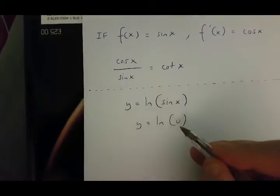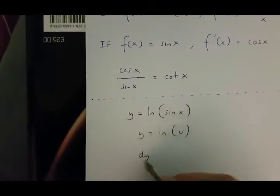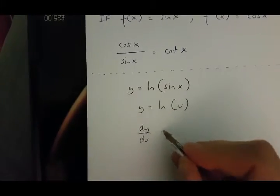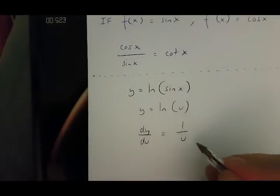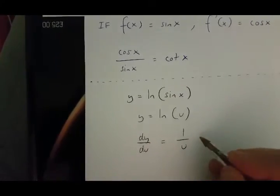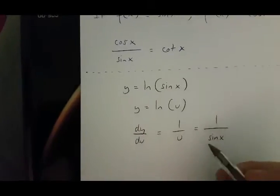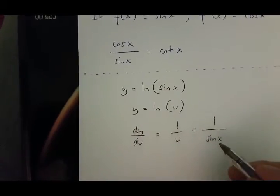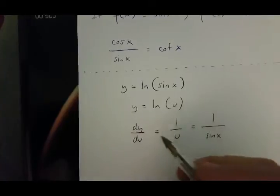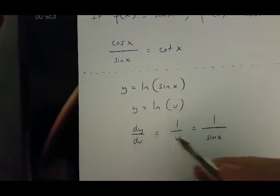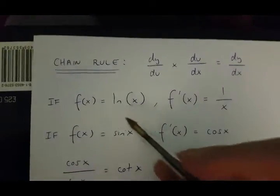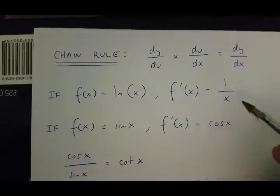Now, if y is ln u, then dy over du is going to be equal to 1 over u, which is 1 over sin x, because u equals sin x. Now, this is true because of this rule over here.